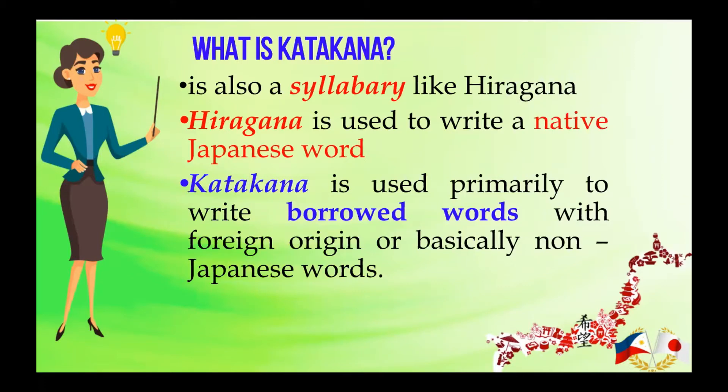Hiragana is used to write native Japanese words, while katakana is used primarily to write borrowed words with foreign origin — basically non-Japanese words like names of foreigners, brand names, foods, and gadgets.